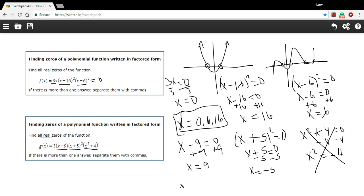So in this case, we've just got negative 5 and 9. So I'd say x is negative 5, 9. So that is how to find the zeros, the real zeros of some functions that are written in factored form.